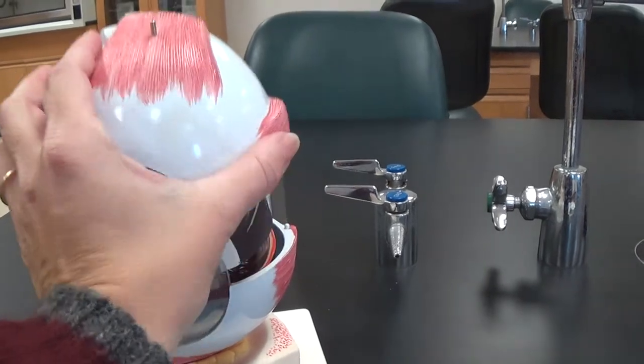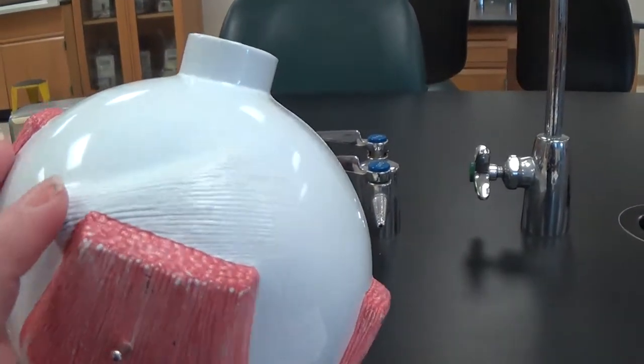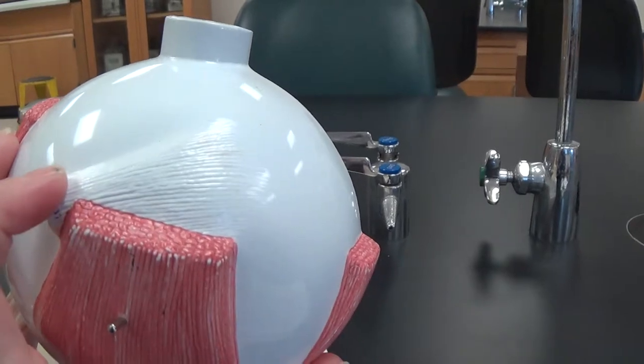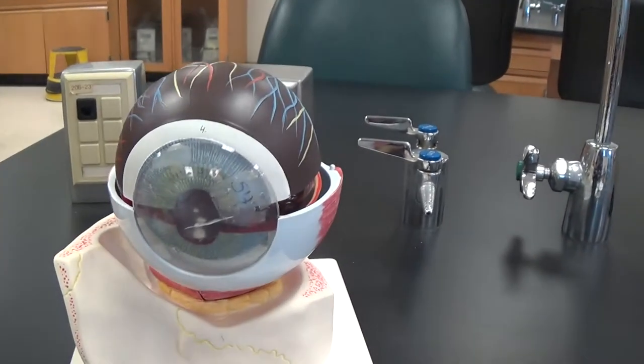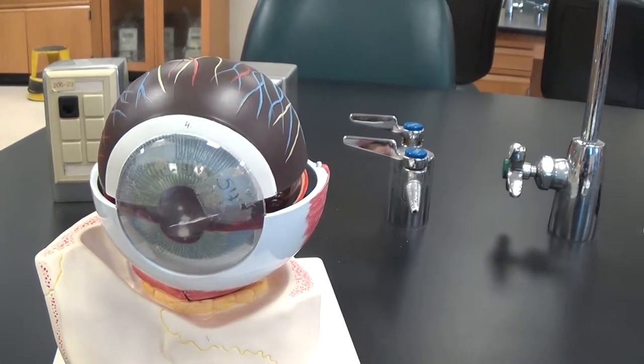When I pull this layer off, we can see a second muscle here that's oblique in nature. That is the superior oblique. And on the bottom side, we would have an inferior oblique as well.